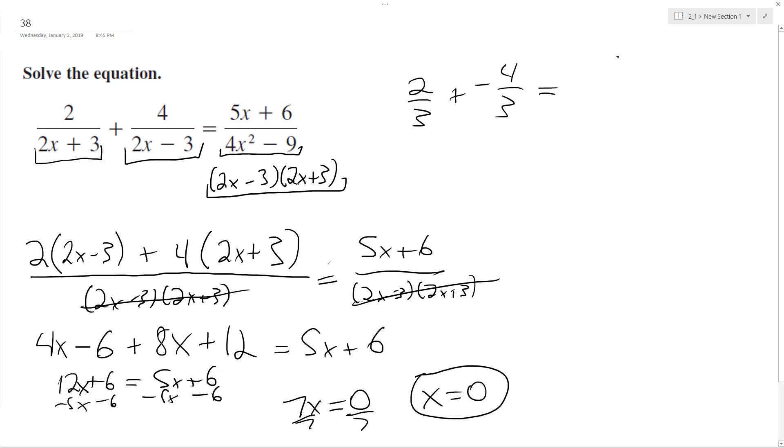And then this ends up being 6 over negative 9. So this ends up being negative 2 thirds because 2 minus 4 is negative 2 over 3. And then negative 6 over 9 can reduce to negative 2 thirds. So that proves that x equals 0 is the correct answer.